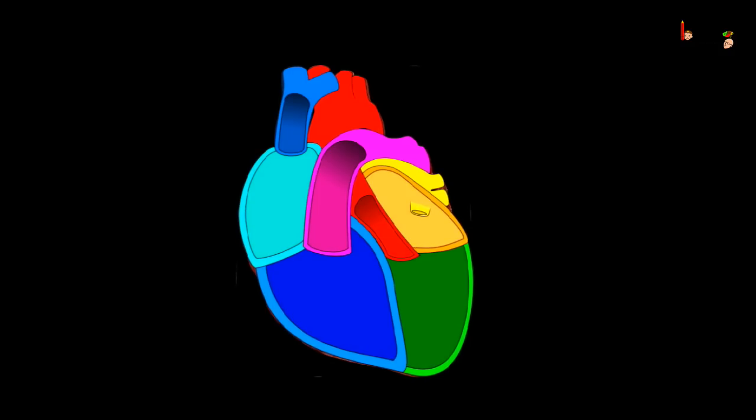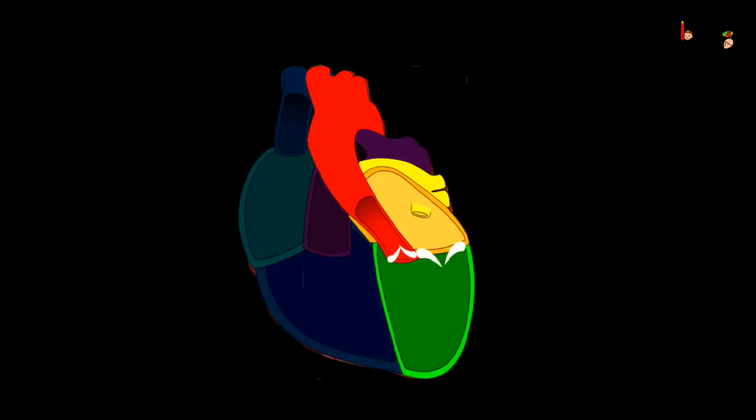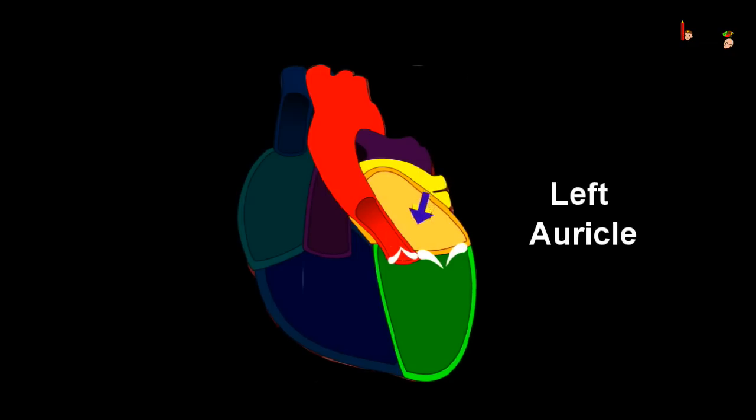It returns to the heart so that the heart can send it to different parts of the body. The oxygenated blood comes to the left atrium of the heart, then the left atrium pumps the blood into the left ventricle.